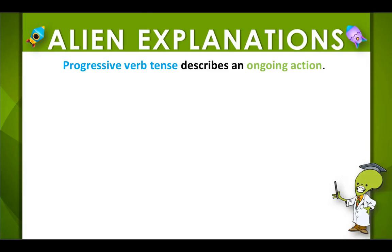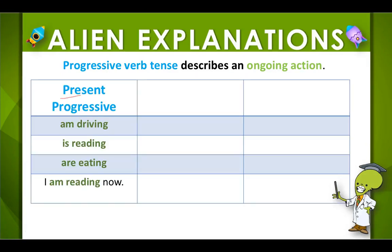Progressive verb tenses describe an ongoing action. The present progressive describes an action that is happening right now. It uses the ing form and the present verb am, is, or are. So am driving, is reading, or are eating are examples of present progressive form, like in the sentence: I am reading now.